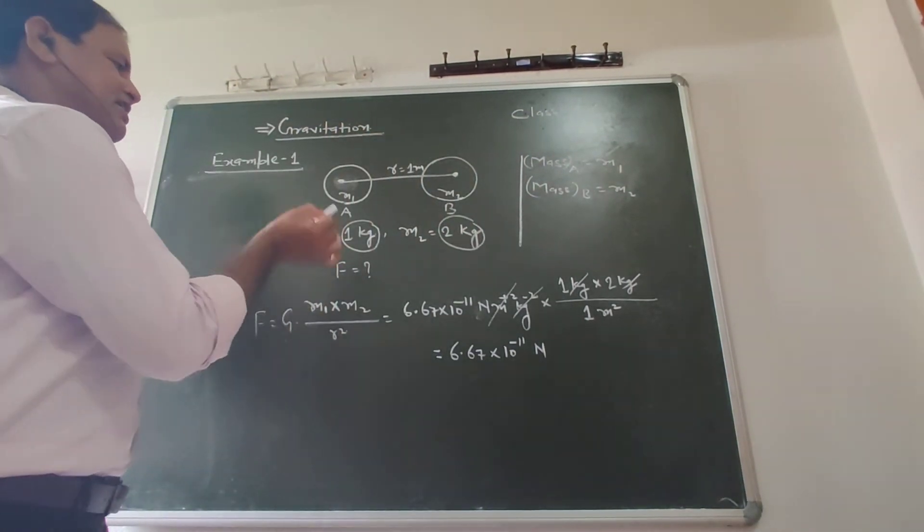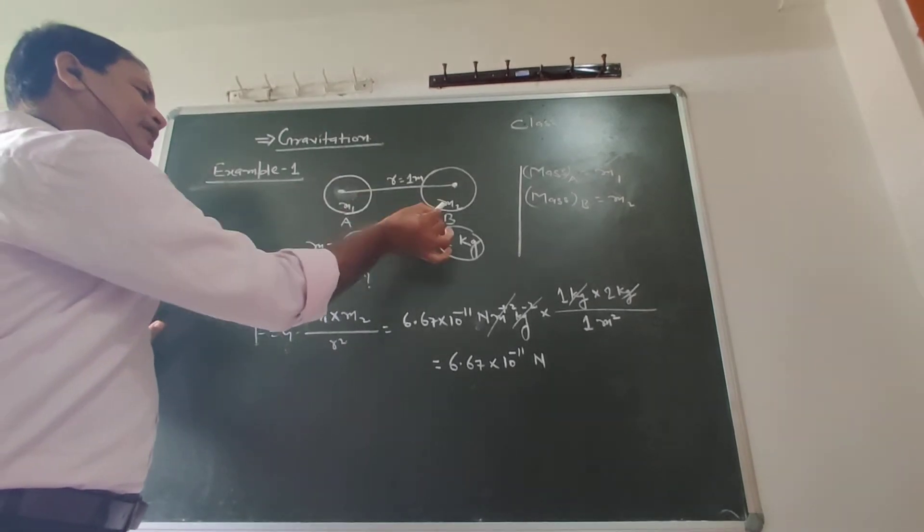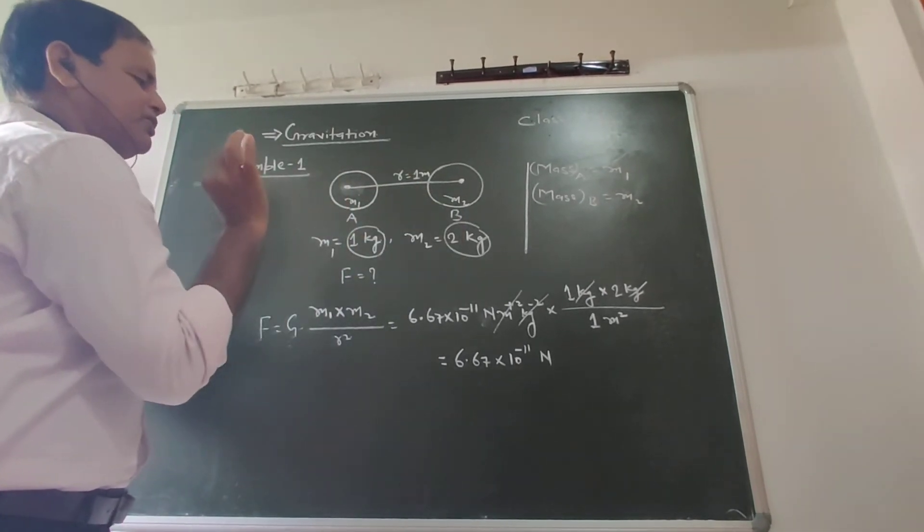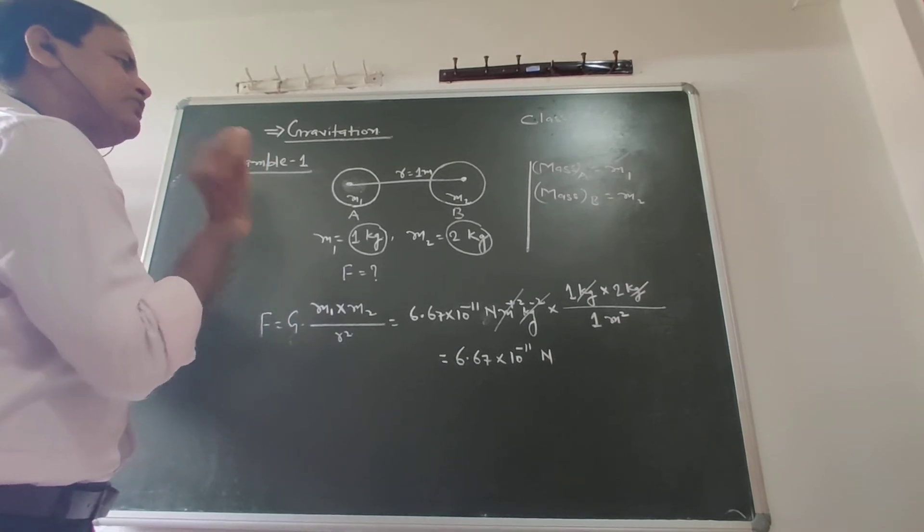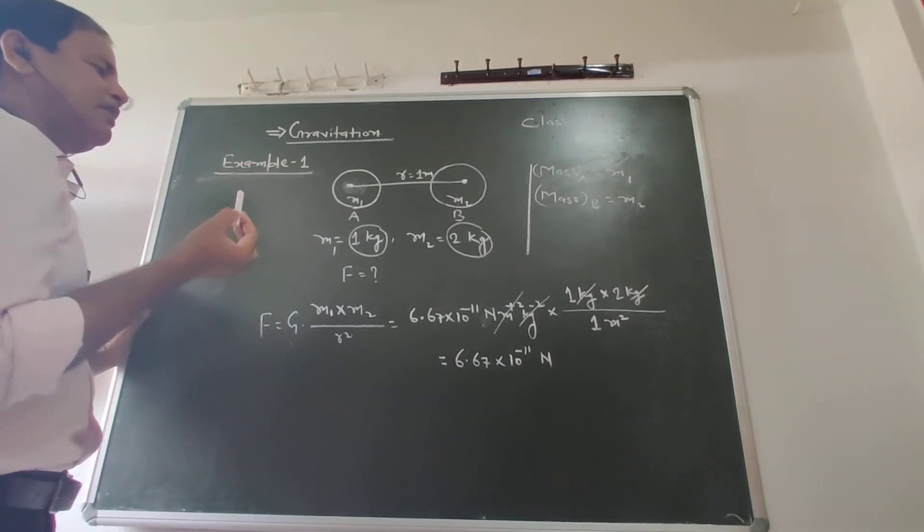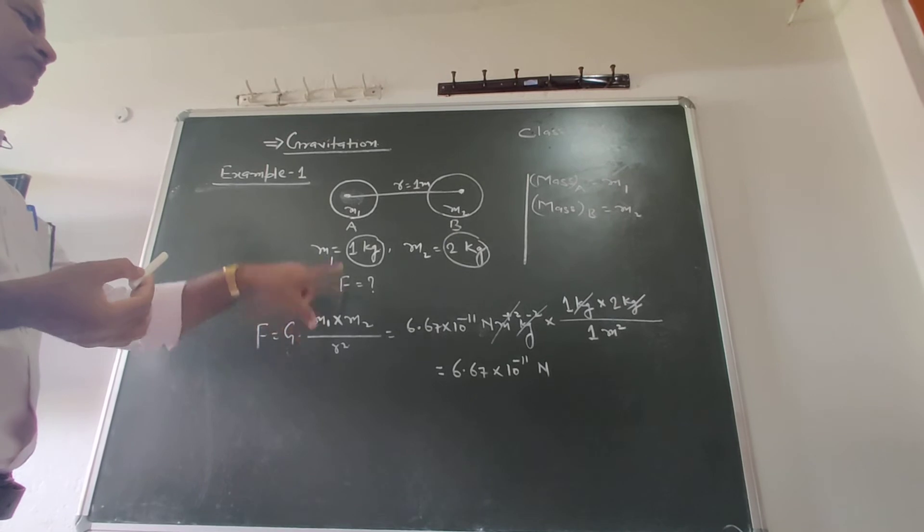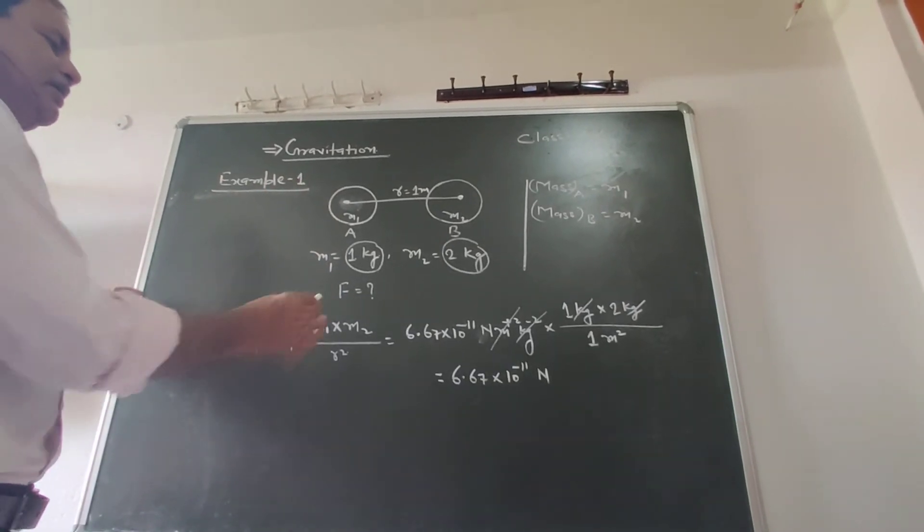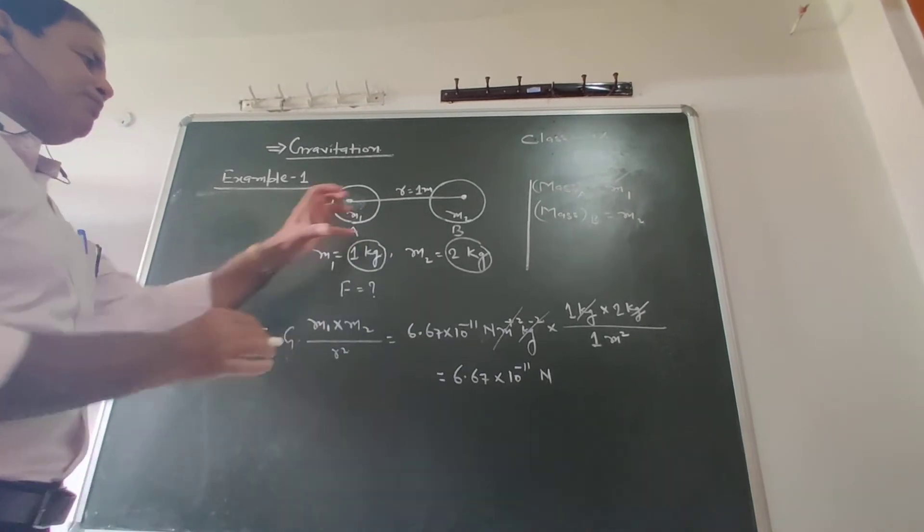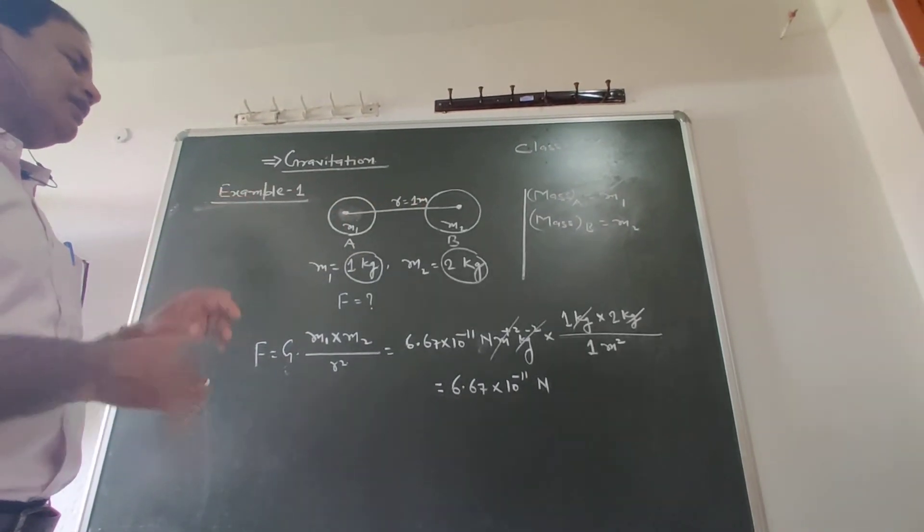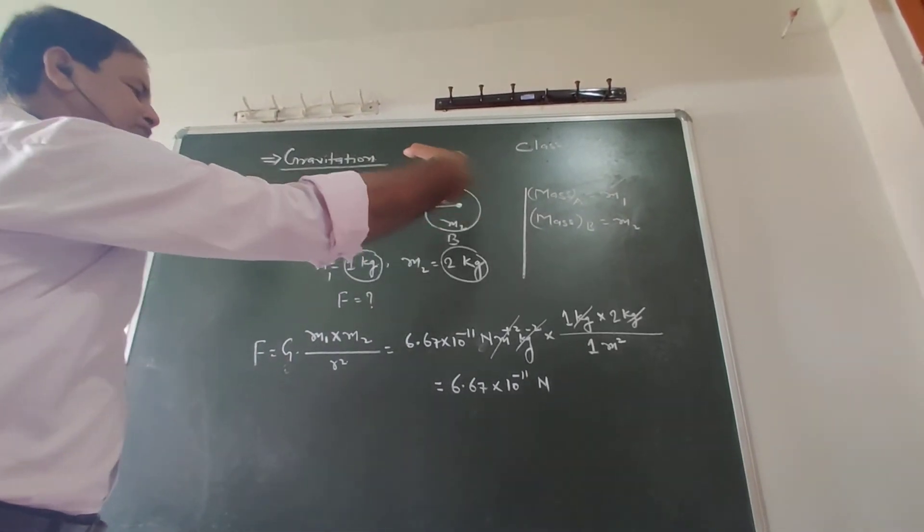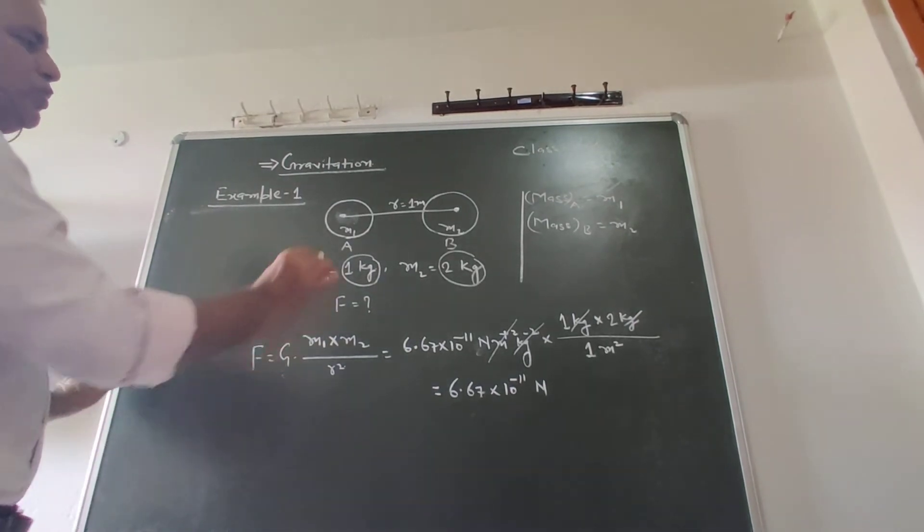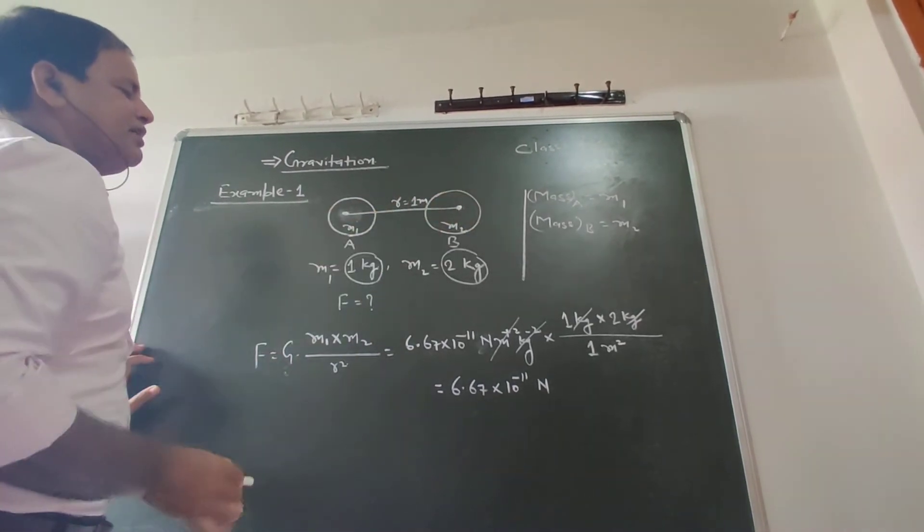In gravitation, A and B are applied force, and the same amount of force is applied. The force of attraction is the same. A and B will attract each other. The force of attraction is equal when they are 1 meter apart.